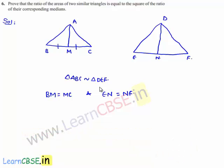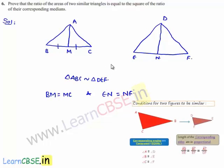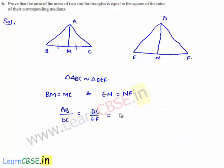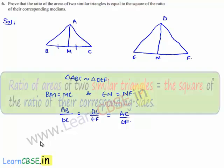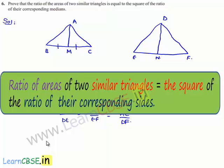Now, as we know that triangle ABC is similar to triangle DEF, the sides will be in proportion. Therefore, we can write AB/DE = BC/EF = AC/DF. We also know that the ratio of the area of two similar triangles is equal to the square of the ratio of their corresponding sides.